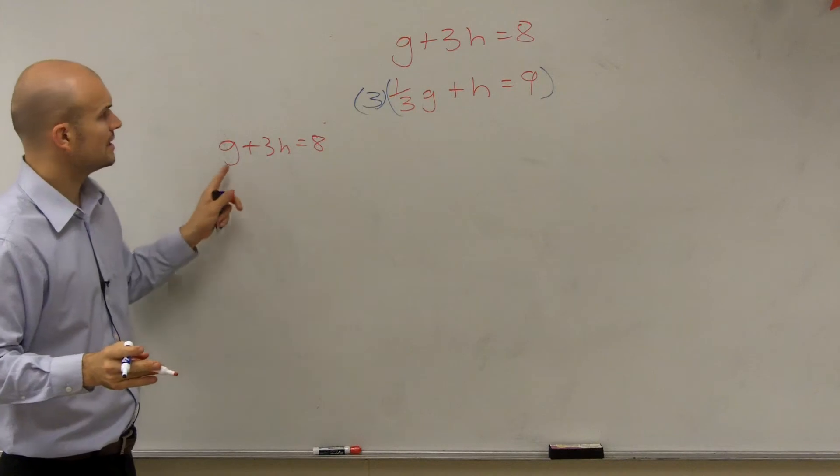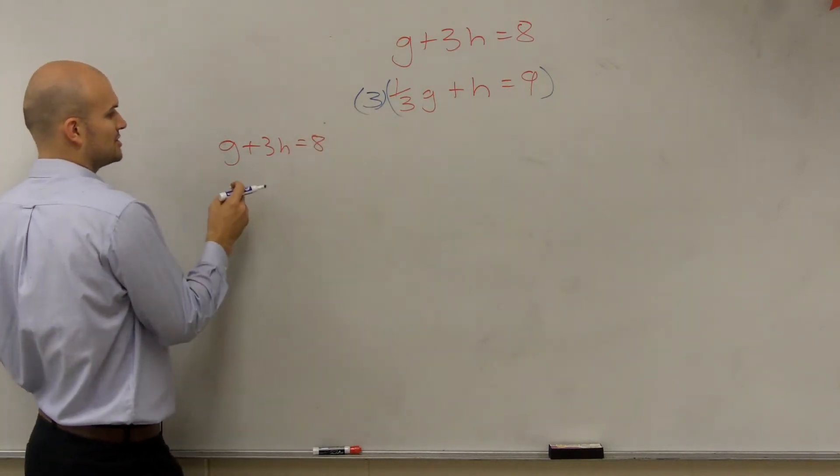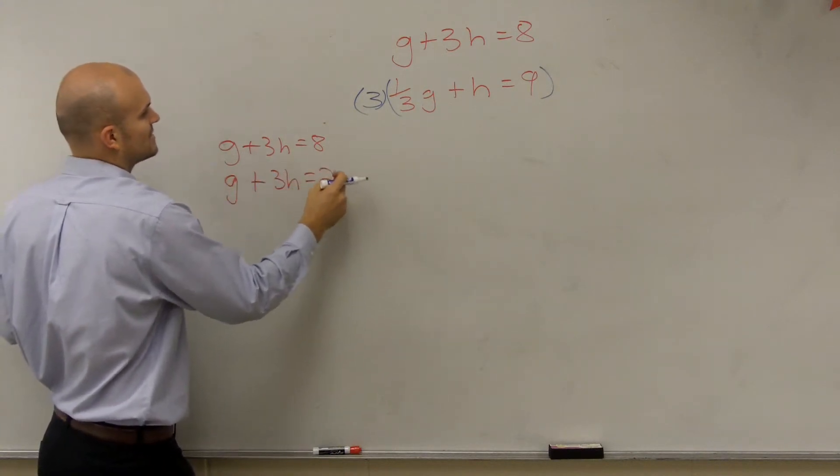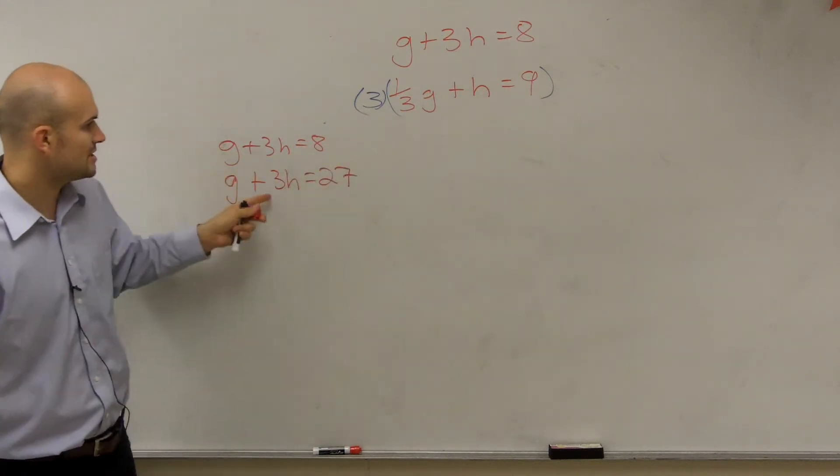I just rewrote the first expression. And then the next one is just going to be g plus 3h equals 27. If I multiplied the bottom by 3, right? Then could I use substitution here?